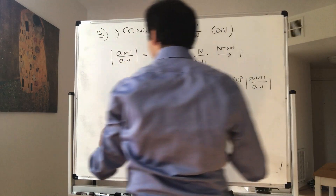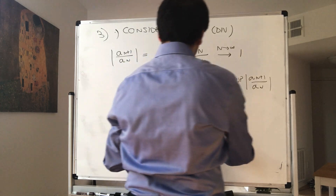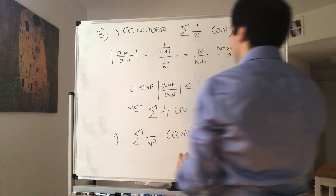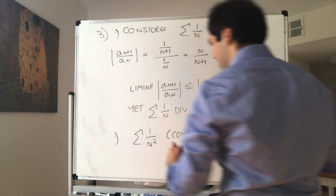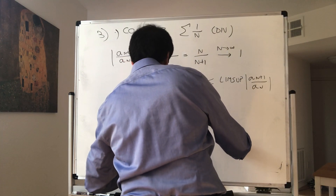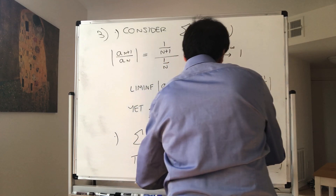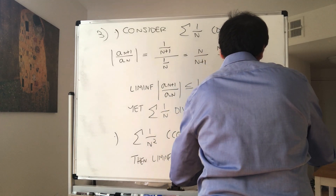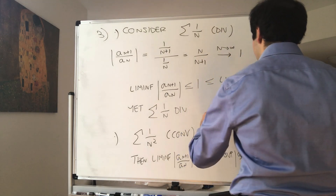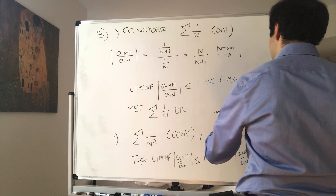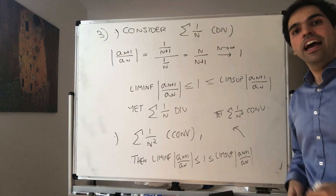On the other hand, if you do the same thing with the sum of 1/n², which converges, you essentially get the same result — the lim inf of the ratios is less than or equal to 1, less than or equal to the lim sup of the ratios. Yet it converges. This says that in that case we cannot really conclude anything — it's inconclusive.